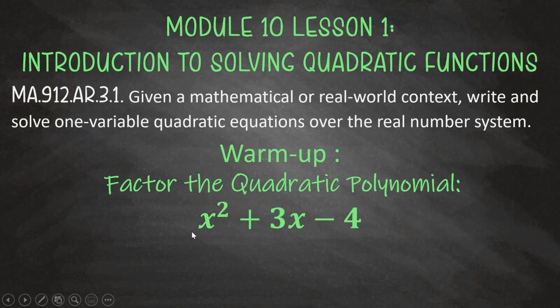The warm-up for today is to factor this quadratic polynomial, because in Module 9, the last thing we learned about is how to factor a quadratic polynomial. So this one, remember our a term is equal to 1, and our b is 3, and our c is negative 4. What you're trying to find is what are the two numbers that multiply to give you negative 4, but add together to give you 3. See if you can figure that one out, and then check with your teacher later.